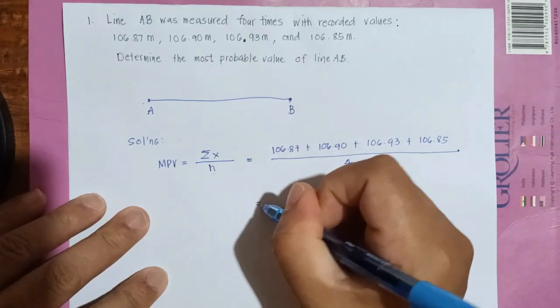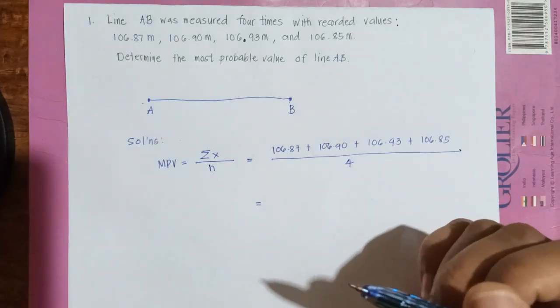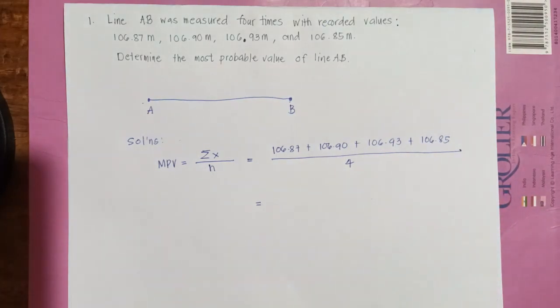So you will get this value using your calculator. So 106.87 plus 106.90 plus 106.93 plus 106.85, and then you get the result.